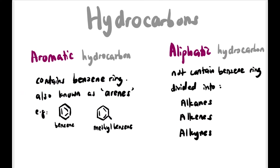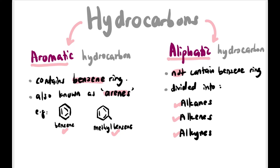Hydrocarbons can be classified as aromatic or aliphatic. The main difference between these two is that aromatic hydrocarbons have a benzene ring, while aliphatic ones do not. The benzene ring is sometimes also called an arene. Examples include benzene and methylbenzene. Aliphatic hydrocarbons have no benzene ring and can be further classified into alkanes, alkenes, and alkynes.